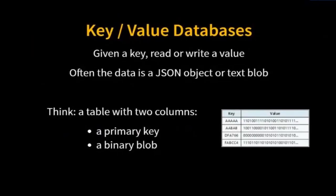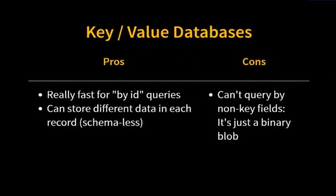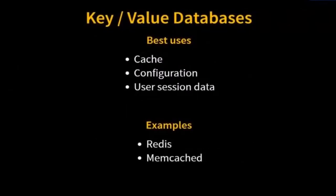A key-value database basically has one primary key column and one blob that is whatever kind of data you need. The blobs don't need to be the same format or even the same length. We read by key and we're able to get that data — so it's really fast if we do queries by ID. I could use this for caching, to store a user session or a shopping cart. On the downside, I can't really filter by any other column because the data may be different types. The only way to filter by a non-key ID is to iterate through all columns, deserializing each one. It's great for cache, configuration, and user data — one value might be a string, one a number, one an array, and a key-value database does just fine with that.